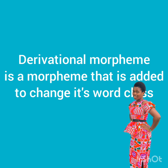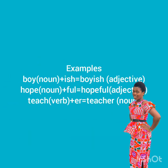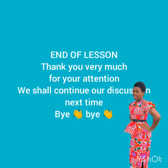Derivational morphemes are morphemes added to a word that change its word class. For example, 'boy' is a noun — when you add '-ish,' making 'boyish,' you get an adjective. Also, 'hope' is a noun — when you add '-ful,' you get 'hopeful,' which is an adjective. So you can see it changes the word class.